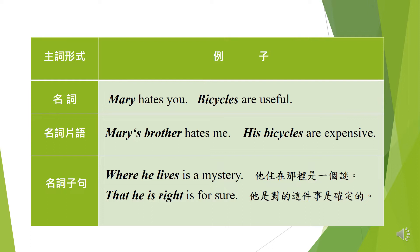在這個地方，Mary 很明顯地當作這個句子的主詞，它是一個名詞。Bicycles are useful，脚踏車很有用，bicycles 很明顯地在這個句子裡面當主詞，它也是一個名詞。接下來我們看名詞片語：Mary's brother hates me，Mary's brother 是一個名詞片語，在這個句子裡面當主詞。